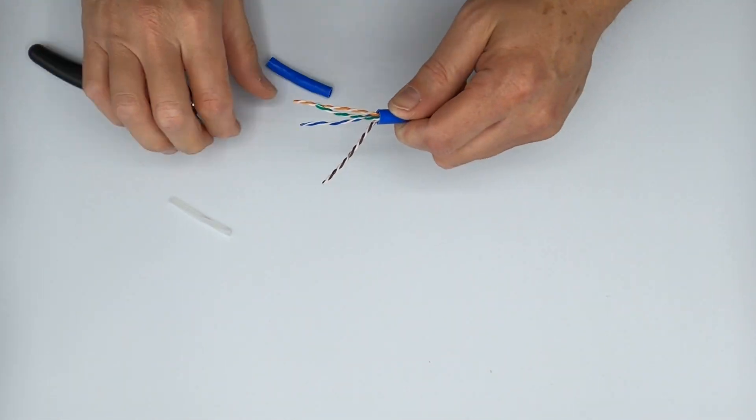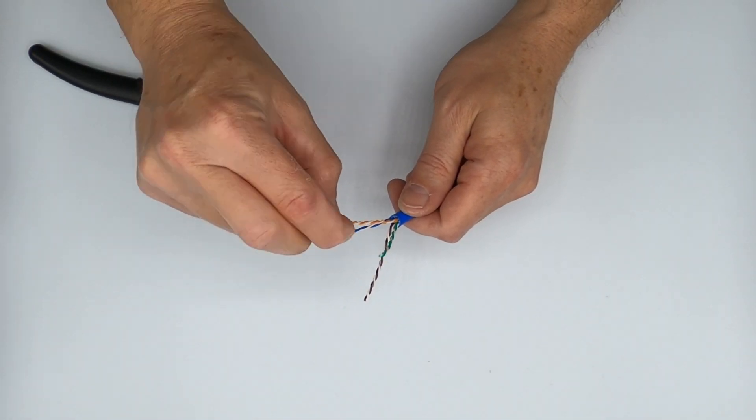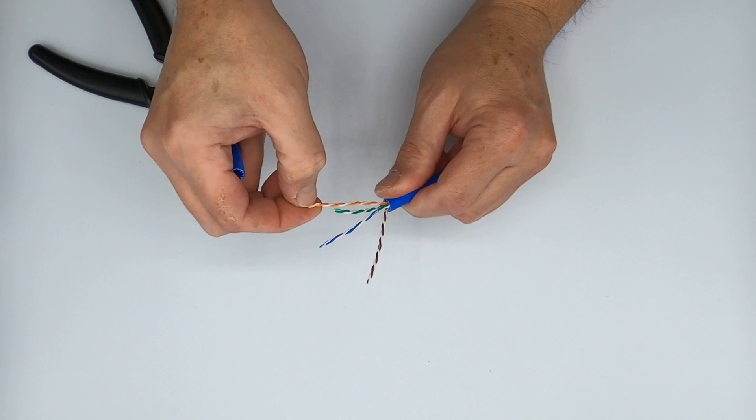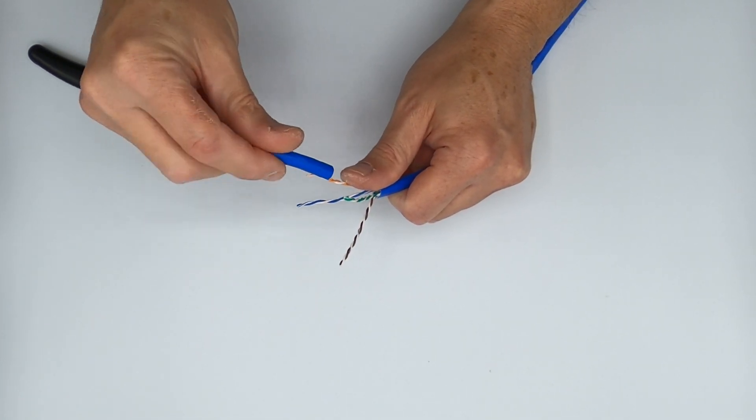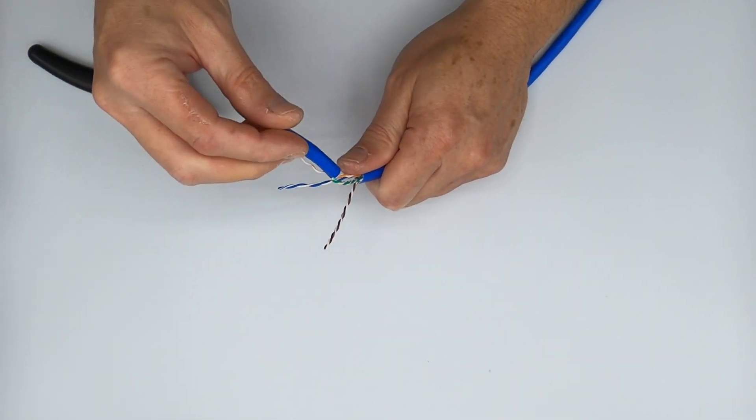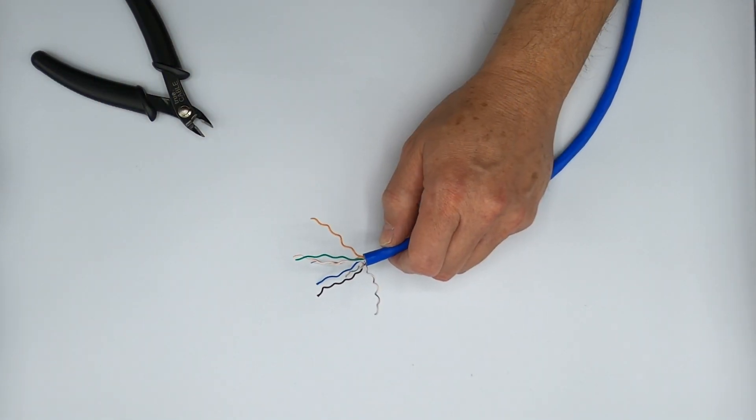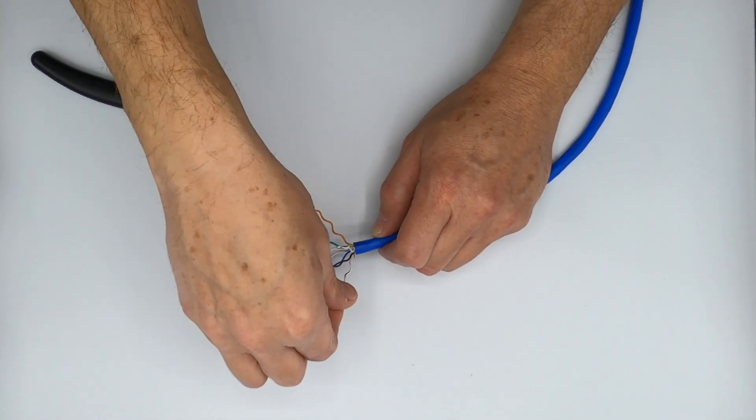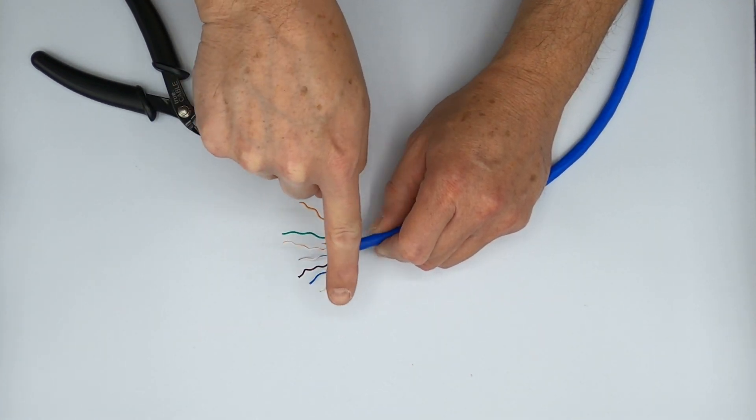Put them back out. Then using your little cable jacket piece, you can untwist these conductors. You have to start them with your finger typically first. And just take them down one pair at a time. You got four pairs you got to work with. So all of the twists have been, well, I should say the conductors have been untwisted, but we need to get rid of these twists here.